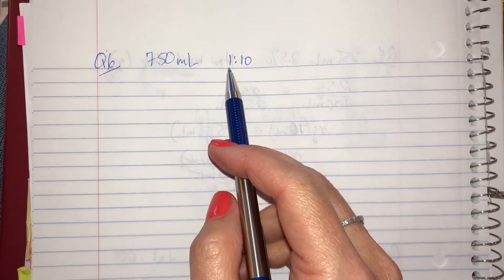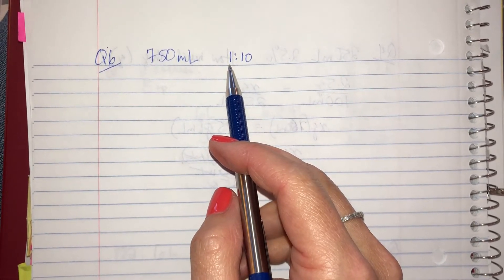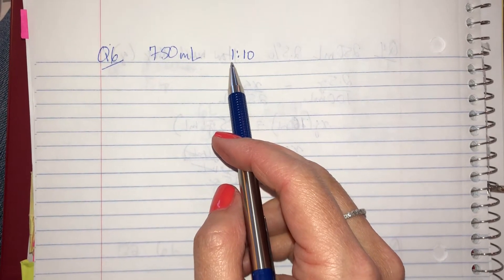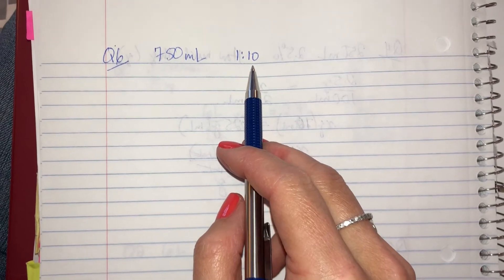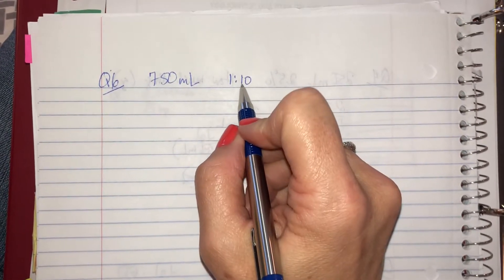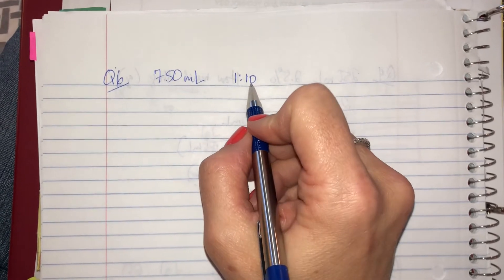This number is telling me how much of my cleaner I need, or the solute. This one's telling me how much solvent, which would be the water part. So I have one part cleaner for every 10 parts of water.